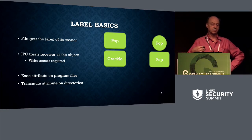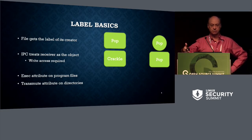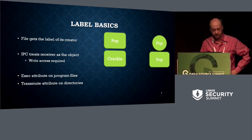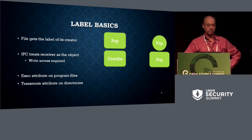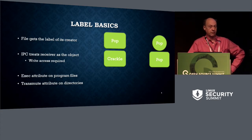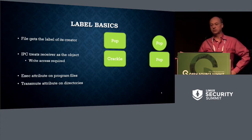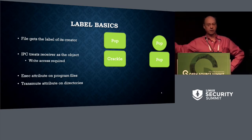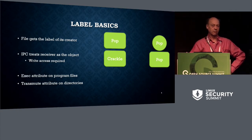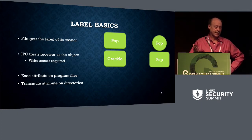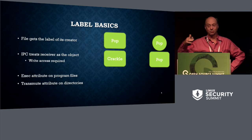SMAC is a mechanism that uses labels on subjects and labels on objects to determine what kind of access you have. When you create an object, it gets the same label as the process that creates it. If you're doing IPC, that's treated as a write operation — so if process A is going to write to process B, process A's SMAC label has to have write access to process B's SMAC label. That's straight out of Bell-LaPadula.